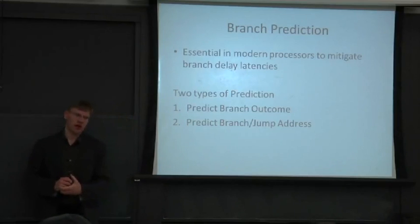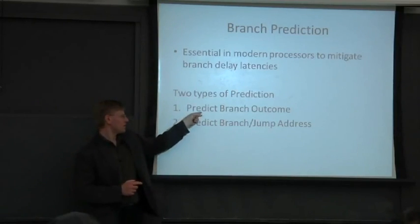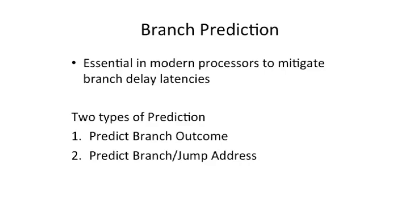So branch prediction - everyone always thinks that it means this first thing. That's not what it means. It encompasses both things. You have to predict the outcome, whether the branch is taken or not taken, and you also want to predict the target address.